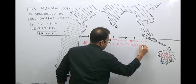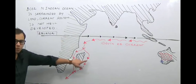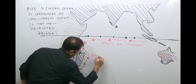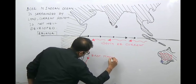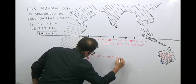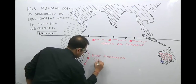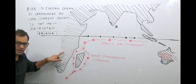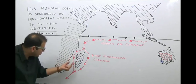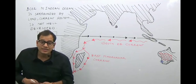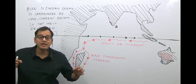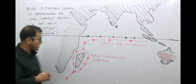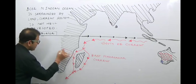The South Equatorial Current is bifurcated into two types. One is the East Madagascar Current, which flows along the eastern side of Madagascar. The other current flows between mainland Africa and Madagascar, through a gap known as the Mozambique Channel — named after the country Mozambique — and that current is therefore known as the Mozambique Current.